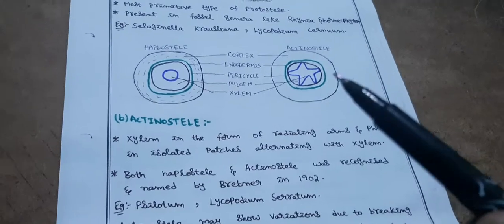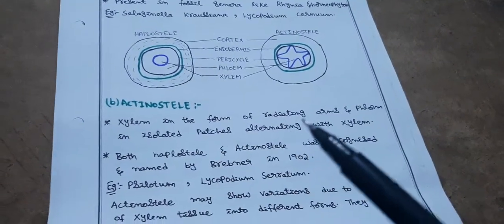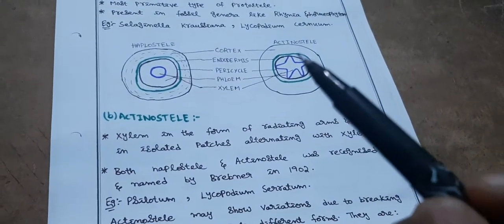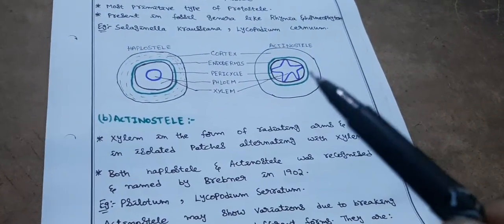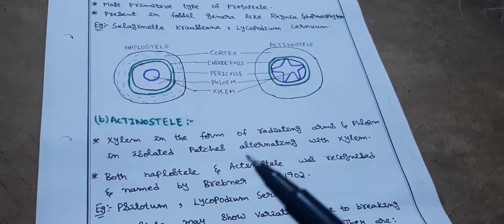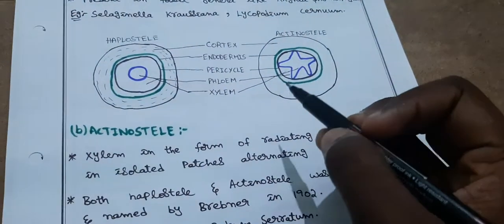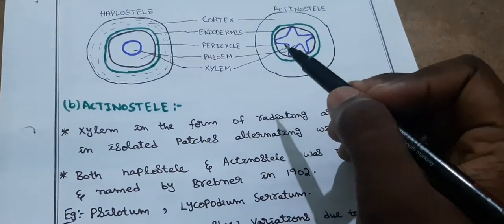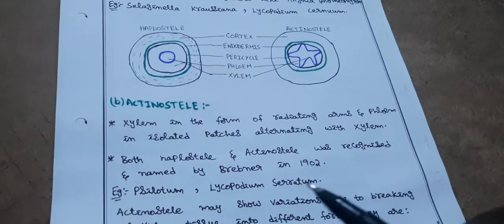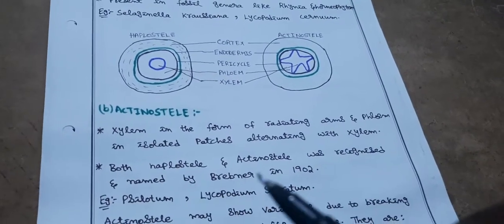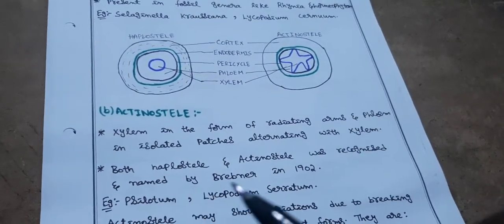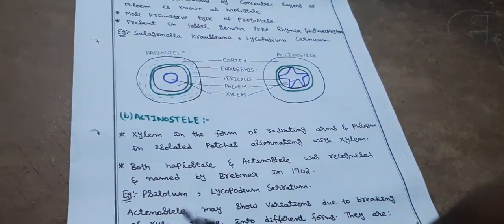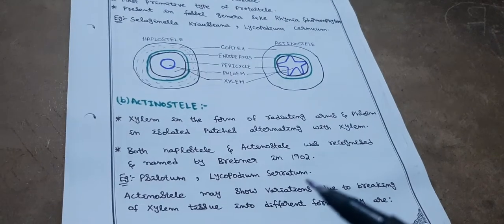Next, actinostele — here xylem is in the form of radiating arms, and phloem is in isolated patches alternating with xylem arms. Both haplostele and actinostele were recognized and named by Brebner in 1902. Examples of actinostele: Psilotum and Lycopodium cernuum.